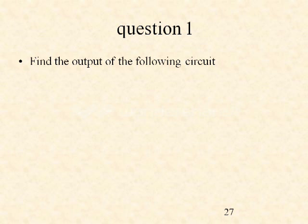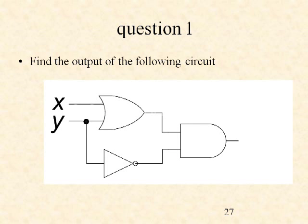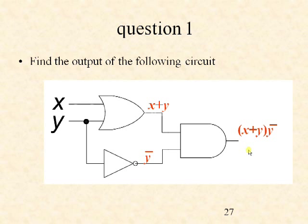Now let us solve some examples based on these concepts. Find the output of the following circuit where x and y are the two input variables. This is an OR gate taking two inputs, a NOT gate taking one input, and the outputs of the OR gate and NOT gate are given as inputs to an AND gate. The output of the OR gate is x plus y. The input y to the NOT gate gives output y complement. Therefore the output of the AND gate is (x plus y)·y bar.